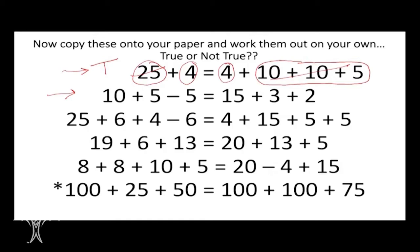Let's go on to the next one — true or not true? I threw a curve here: I put a minus sign — some subtraction. 10 plus 5 minus 5 equals 15 plus 3 plus 2. I see 15 on the left and 15 on the right — looking balanced so far. But then I have 15 minus 5 on the left, which is 10, and 15 plus 5 on the right, which is 20. The operation symbols change the game — this equation is not true. We show that by putting a line through the equal sign.